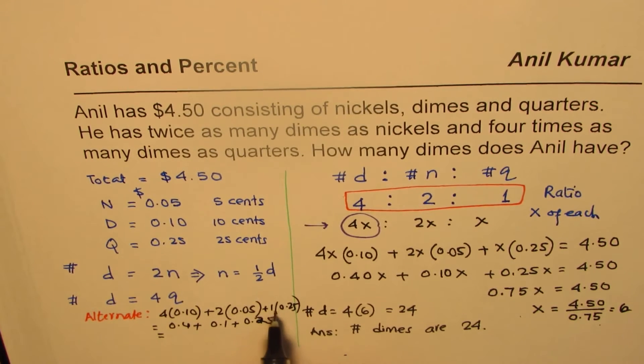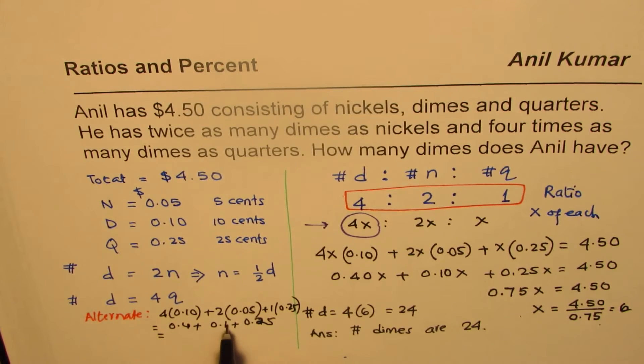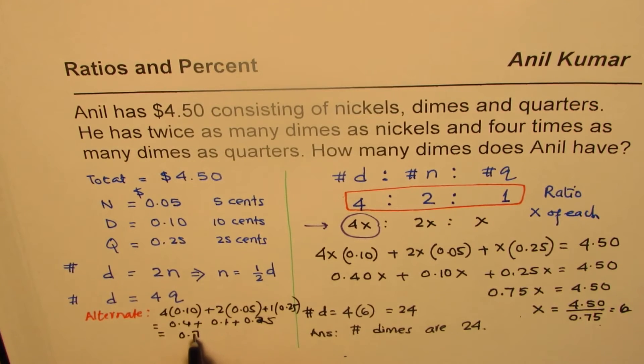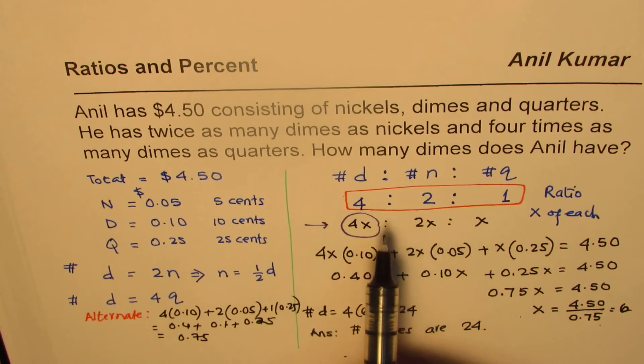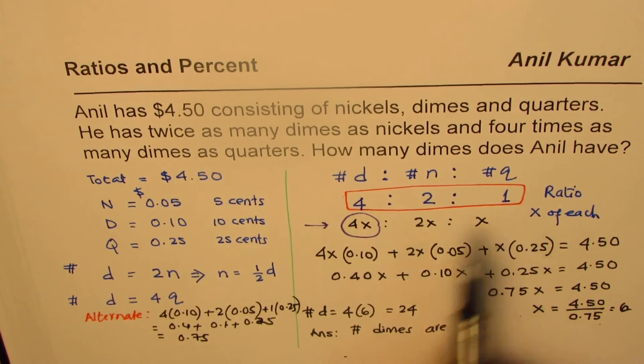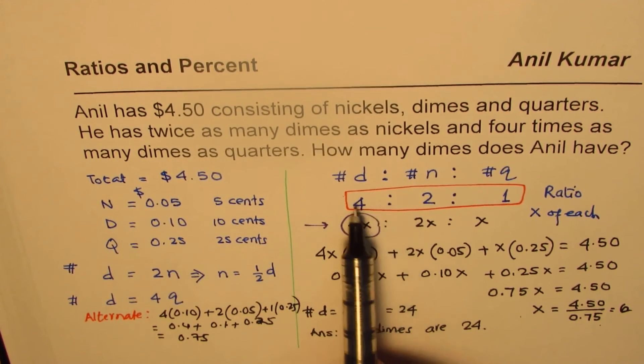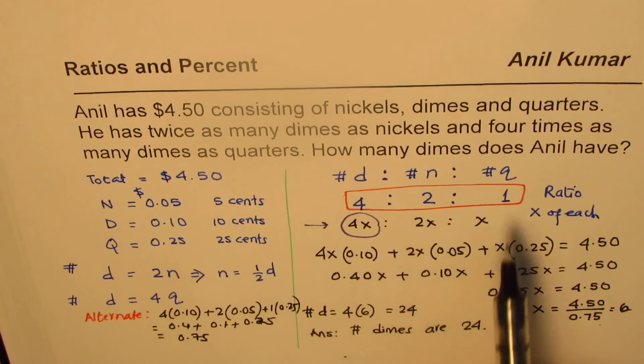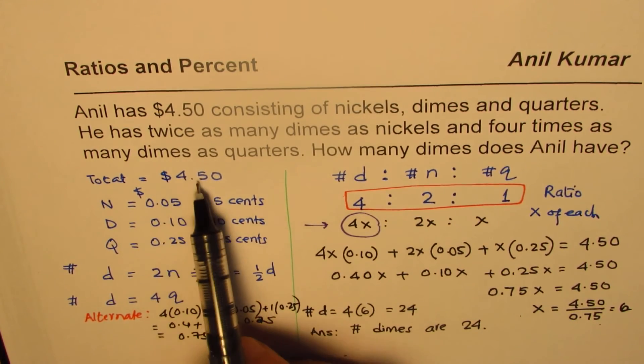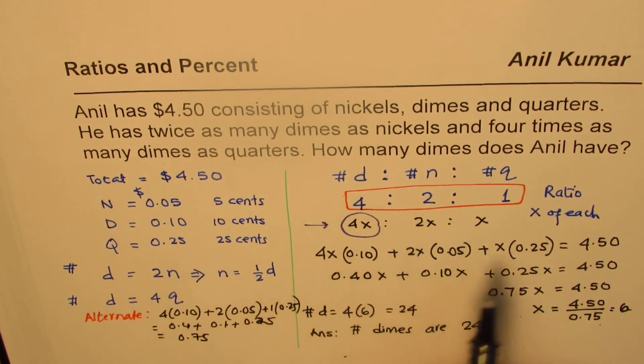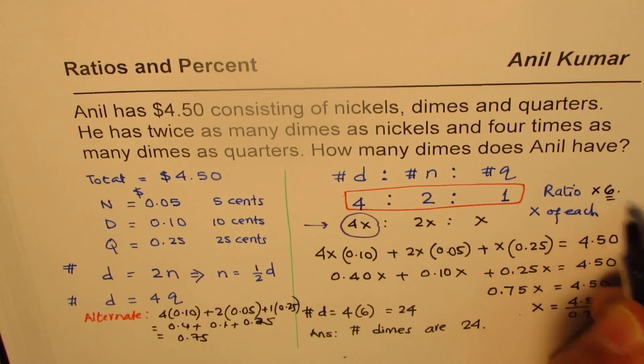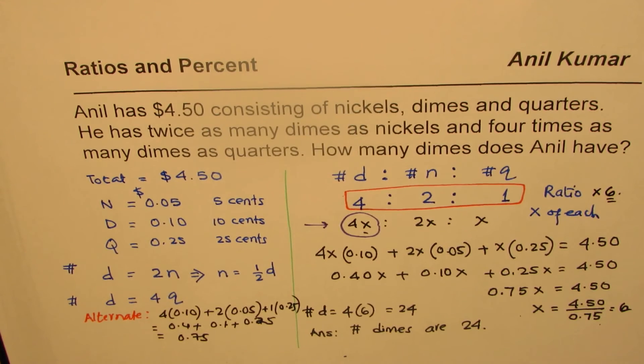So this value is equals to 0.4 plus 0.1 plus 0.25. So when you add it, this is equals to 0.75. So 75 cents will be one set. How many do you need? You need 450. Divide 450 by 75 cents, you'll get your answer. So that's another way of finding the answer. One set will give you 75 cents. How many of such sets will give you $4.50? The answer will be, this should be multiplied by 6 to get you the answer. That's the value of x. So that's an alternate method, which you can always follow.